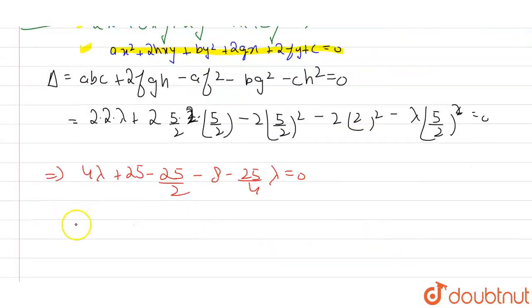So now, I have values in this format. 4 lambda minus 25 by lambda by 4 equals to what? 8 plus 25. I just put the lambda values on the left hand side and the numeric values on the right hand side.